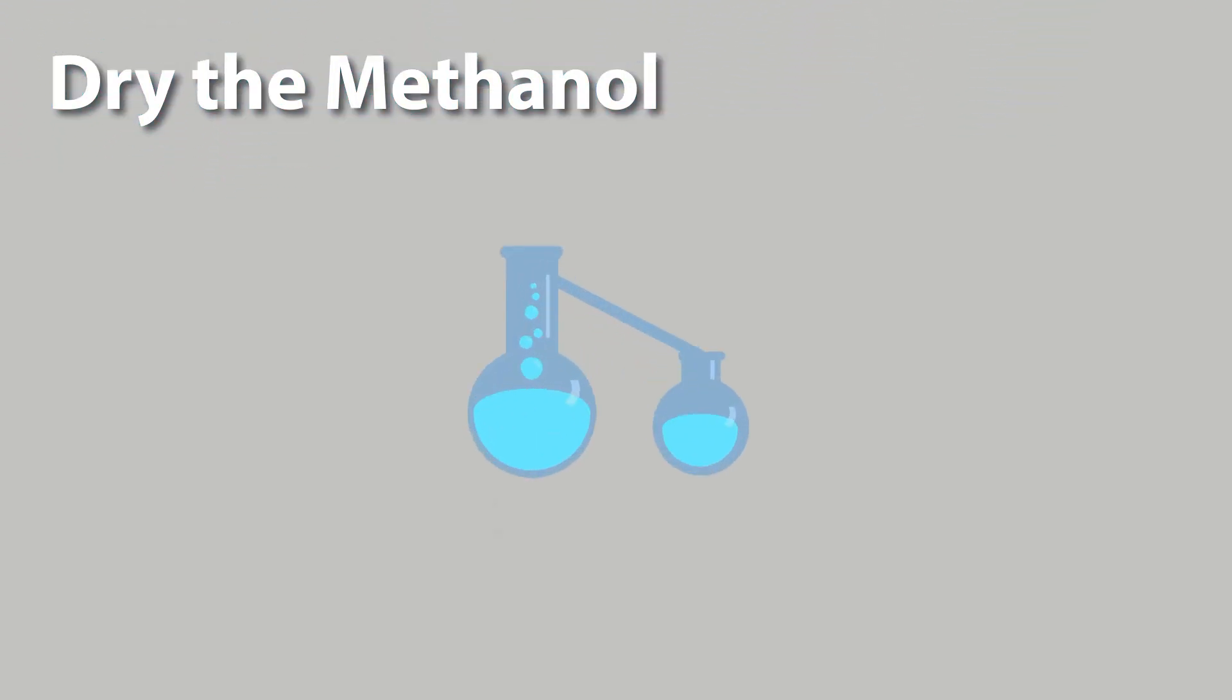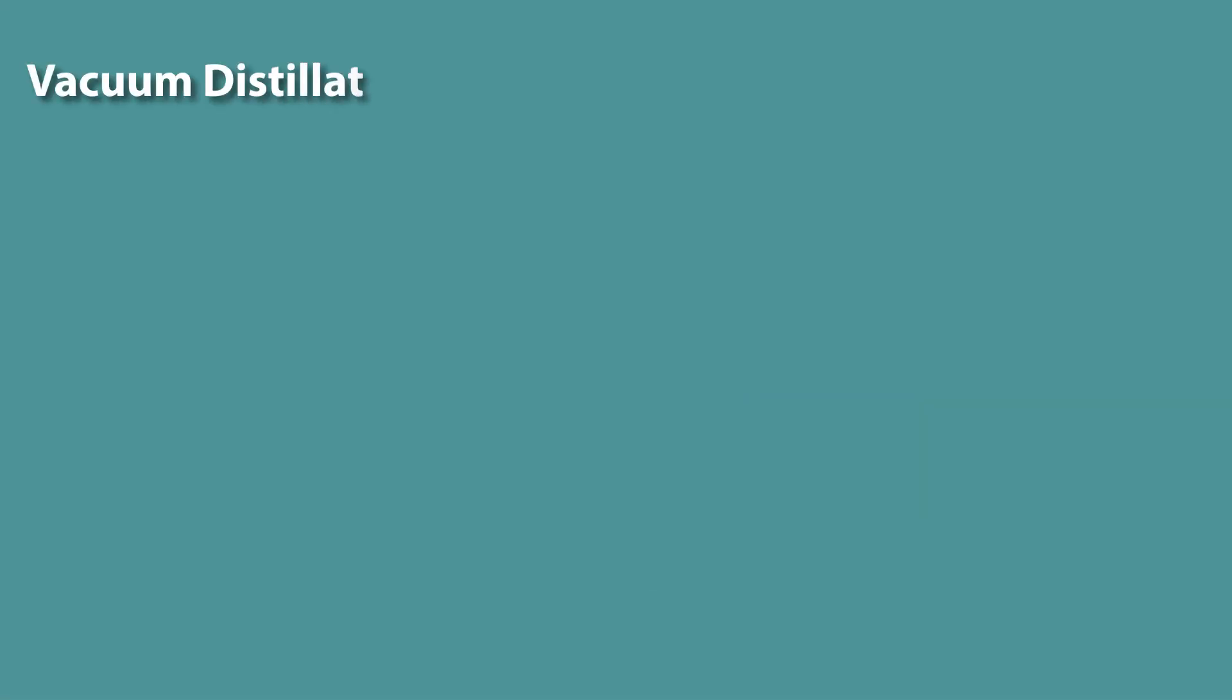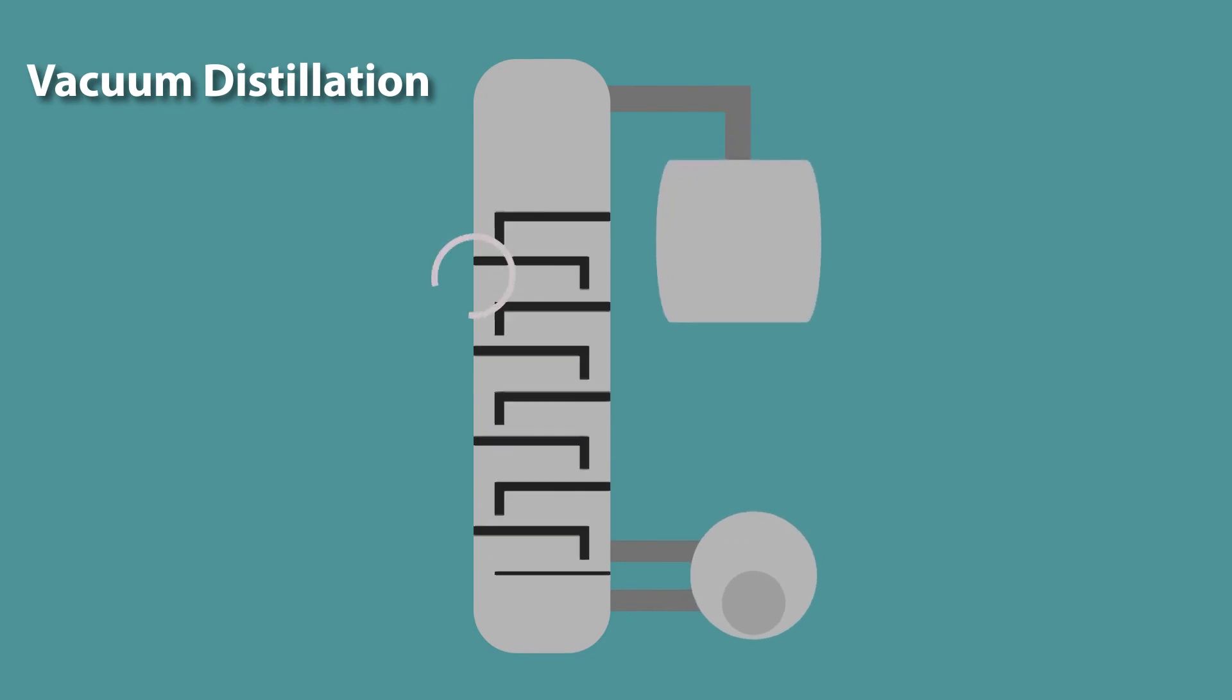The final step in the recovery process is to dry the methanol. Separating the water from the methanol is typically done by distillation, and vacuum distillation is most commonly used in the biodiesel industry. A tall packed or stacked plate column of high separation capacity is needed.